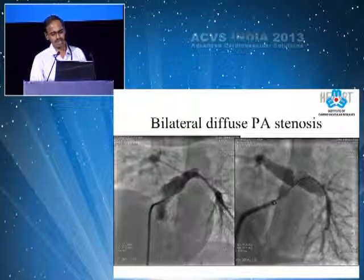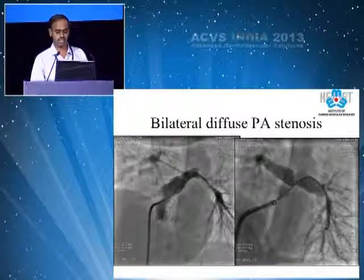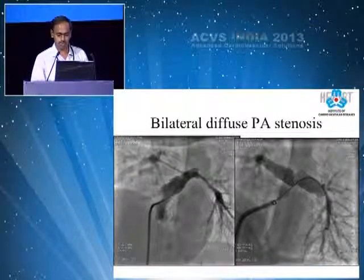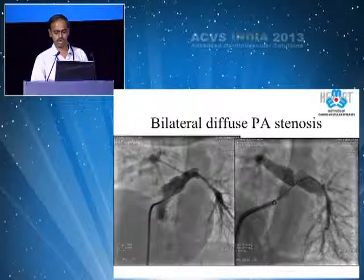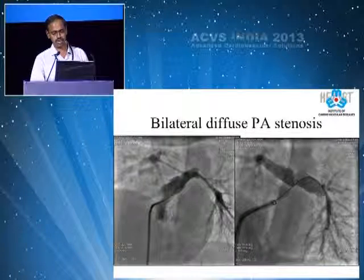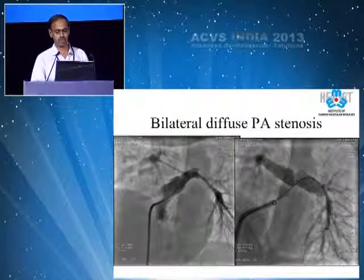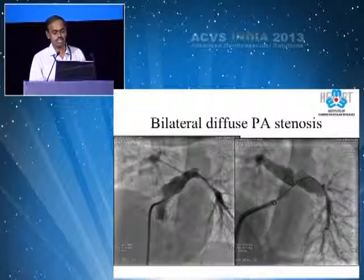In bilateral pulmonary artery stenosis, stenting will be indicated if right ventricular systolic pressure is increasing, more so if there is RV dilatation, dysfunction, or marked right ventricular hypertrophy. These are some examples of pulmonary artery stenosis — a distal MPA stenosis with a good-sized RPA and LPA, shown being stented.